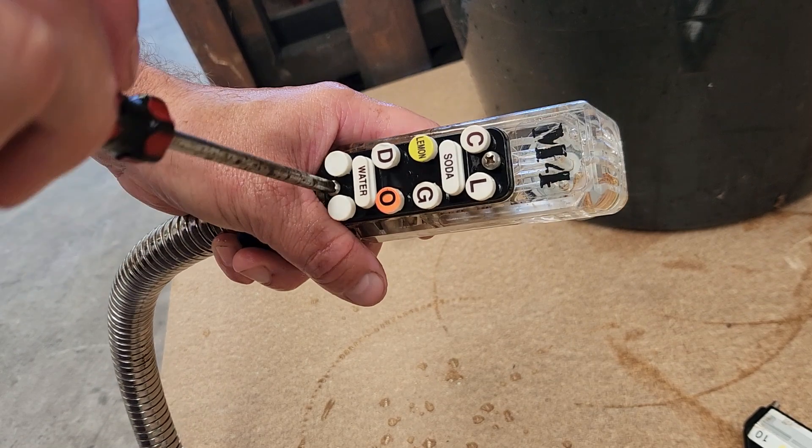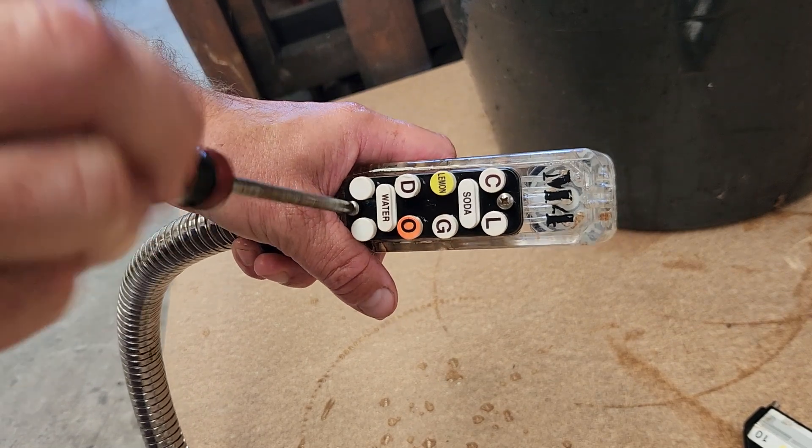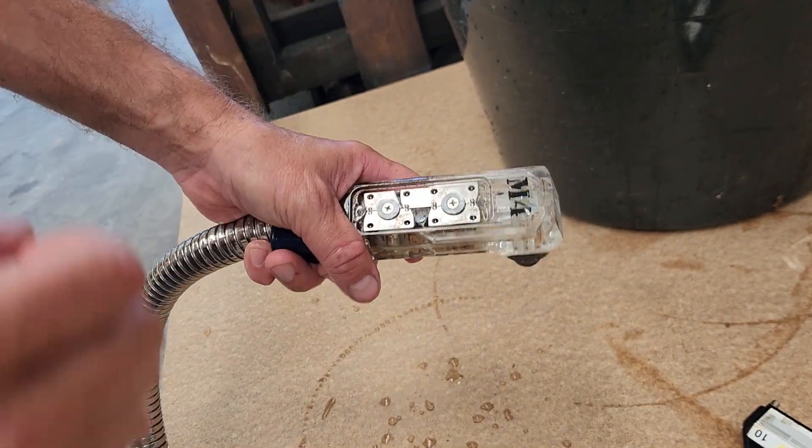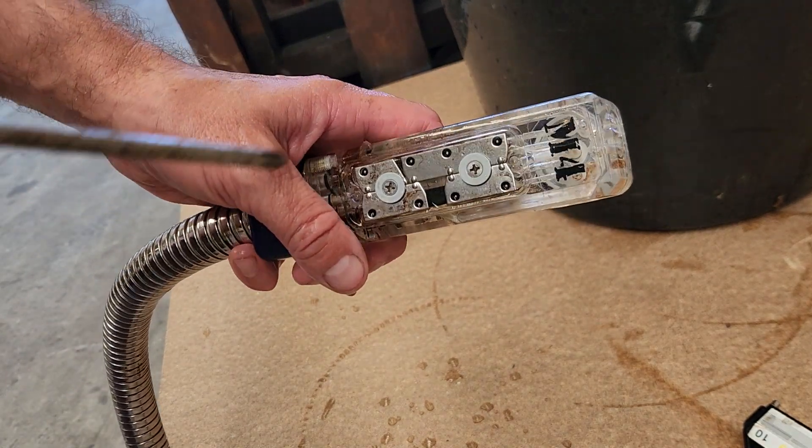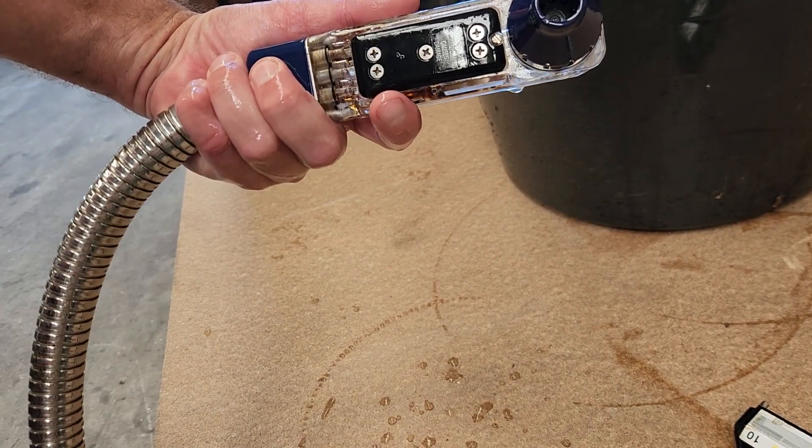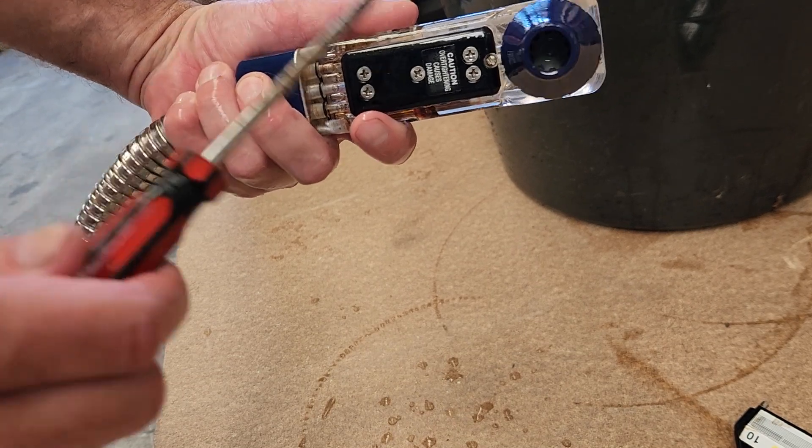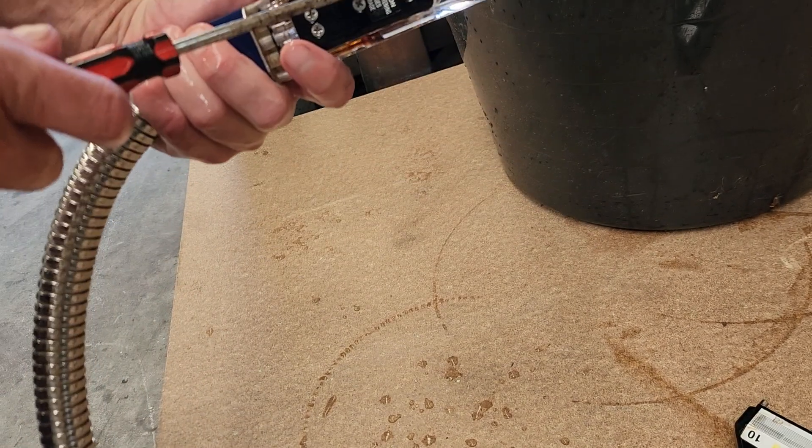So, simply remove the two screws from the button plate and remove the button plate. Under that you'll find a couple of stainless steel plates. One thing, don't take that one off. If it's a Mark IV like this one, not so bad.